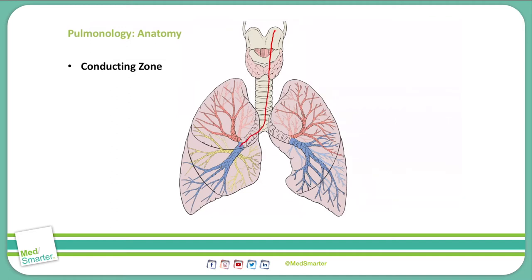Small airways consist of bronchioles that further divide into terminal bronchioles, as you see here. The purpose of the conducting zone is to warm, humidify, and filter the air that enters our respiratory system.